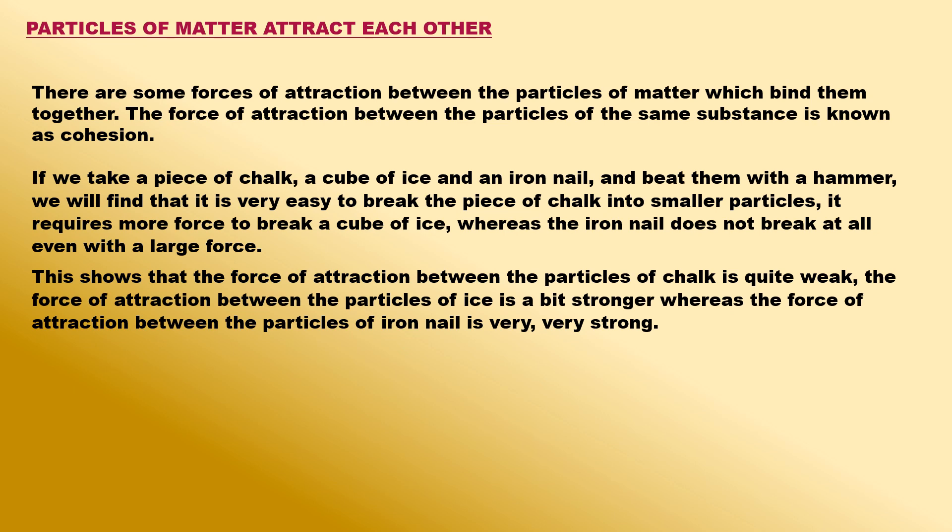If we take a piece of chalk, a cube of ice and an iron nail, and beat them with a hammer, we will find that it is very easy to break the piece of chalk into smaller particles. It requires more force to break a cube of ice, whereas the iron nail does not break at all even with a large force. This shows that the force of attraction between the particles of chalk is quite weak. The force of attraction between the particles of ice is a bit stronger, whereas the force of attraction between the particles of the iron nail is very, very strong.